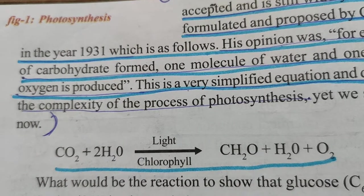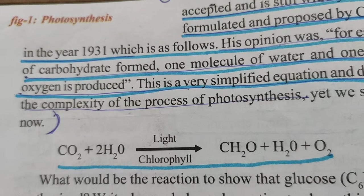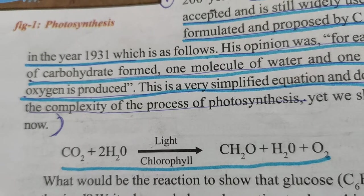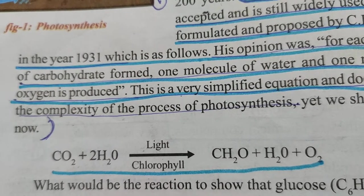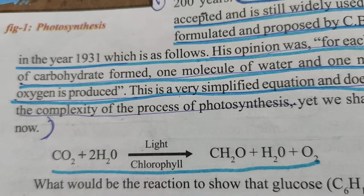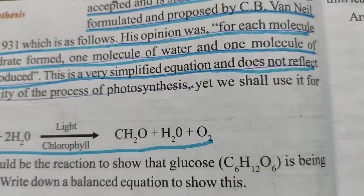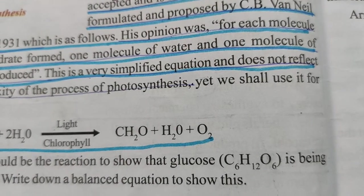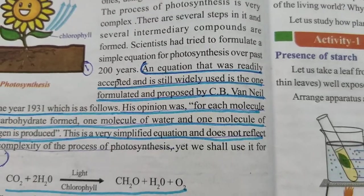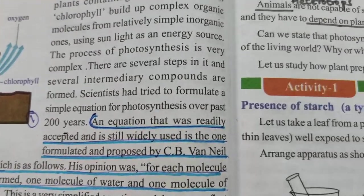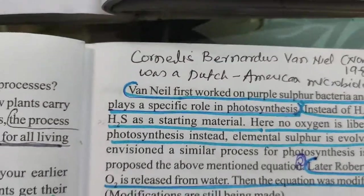The equation given by C.B. Van Niel was: CO₂ + 2H₂O in the presence of light and chlorophyll gives rise to CH₂O + H₂O + O₂. The formula of glucose is C₆H₁₂O₆.